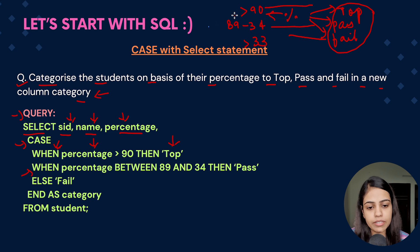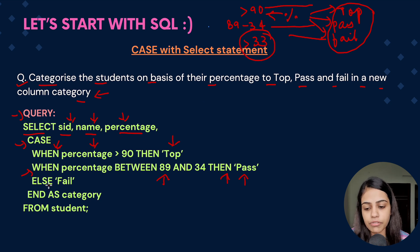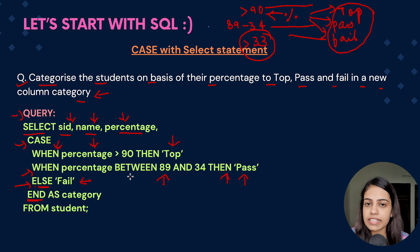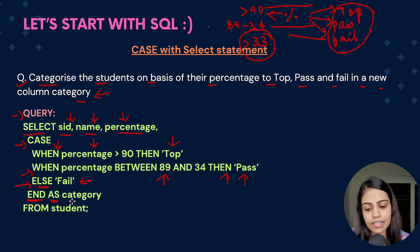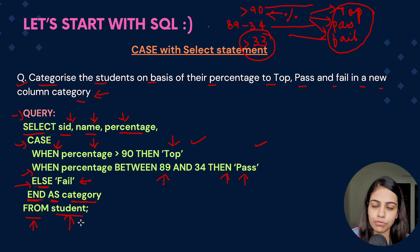We then add a CASE: WHEN percentage > 90 THEN 'Top', WHEN percentage BETWEEN 34 AND 89 THEN 'Pass', ELSE 'Fail', END. We give this an alias 'category' so the result appears in a new column, then add FROM student. This is how we write the CASE query with a SELECT statement.